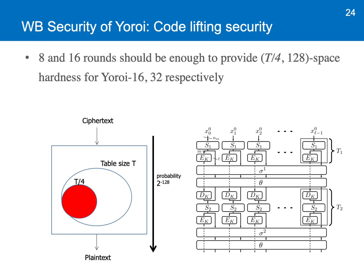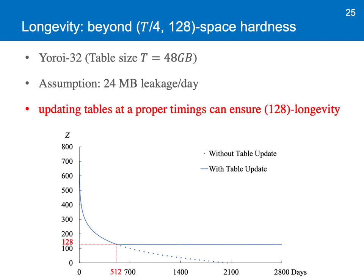Please refer to our paper for how to actually evaluate code lifting security. Now let me talk about longevity — what's missing in the existing ciphers. When we consider continuous leakage, z-longevity is useful. Let's take Yoroi32 as an example, and say 24 megabytes of table data is leaked on a daily basis. As shown in the figure, the security level drops to 2 to the power of minus 128 in 512 days. At this point, by updating tables, it can keep this security level for longer. So by repeating table updates at proper timings, Yoroi32 can maintain this security level, which means Yoroi32 can ensure 128-longevity.